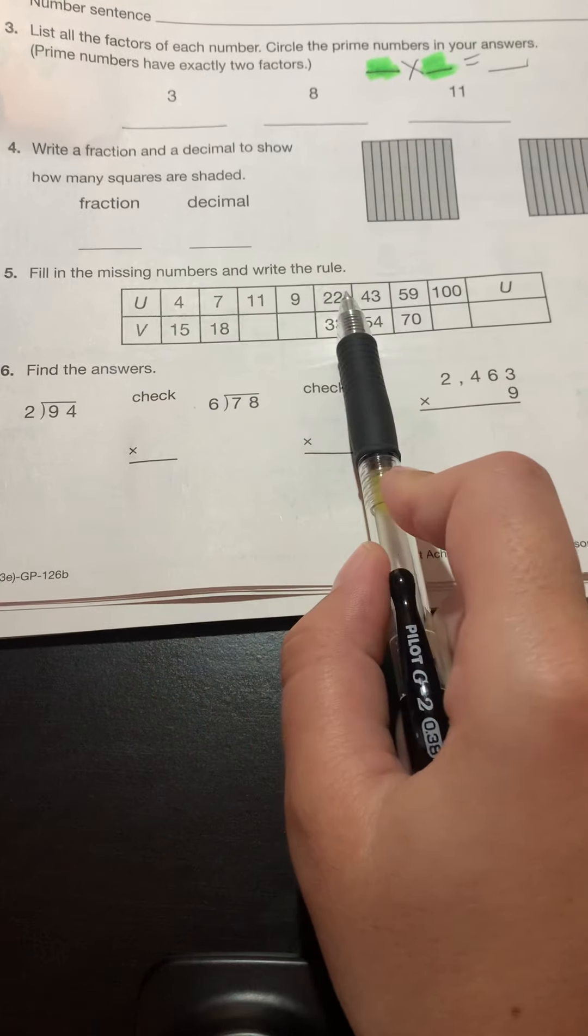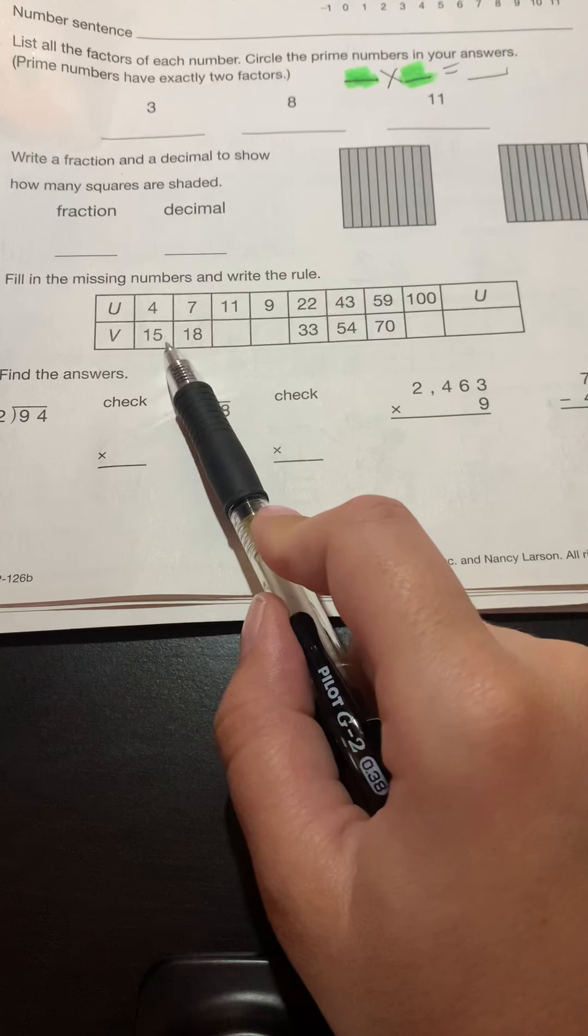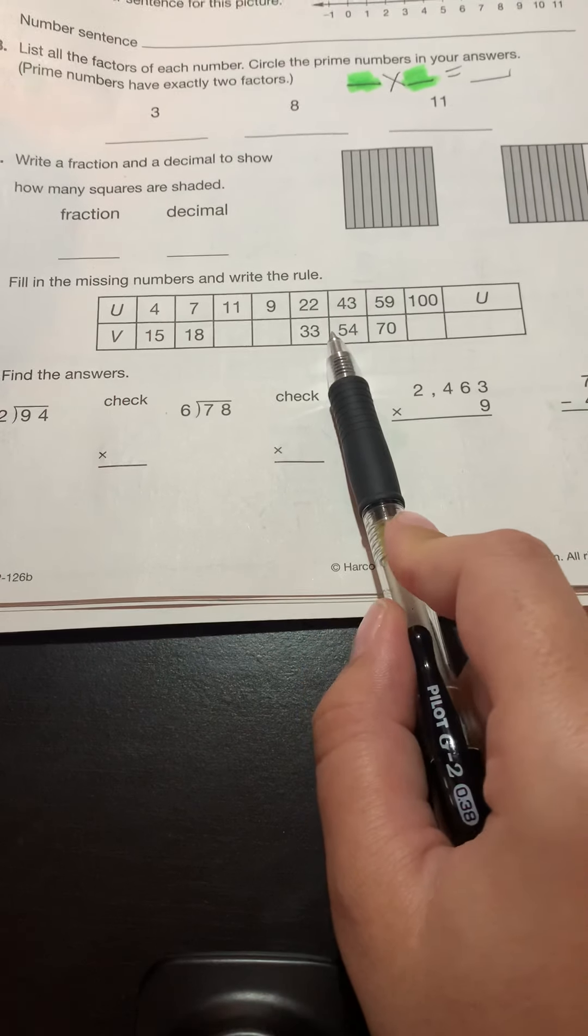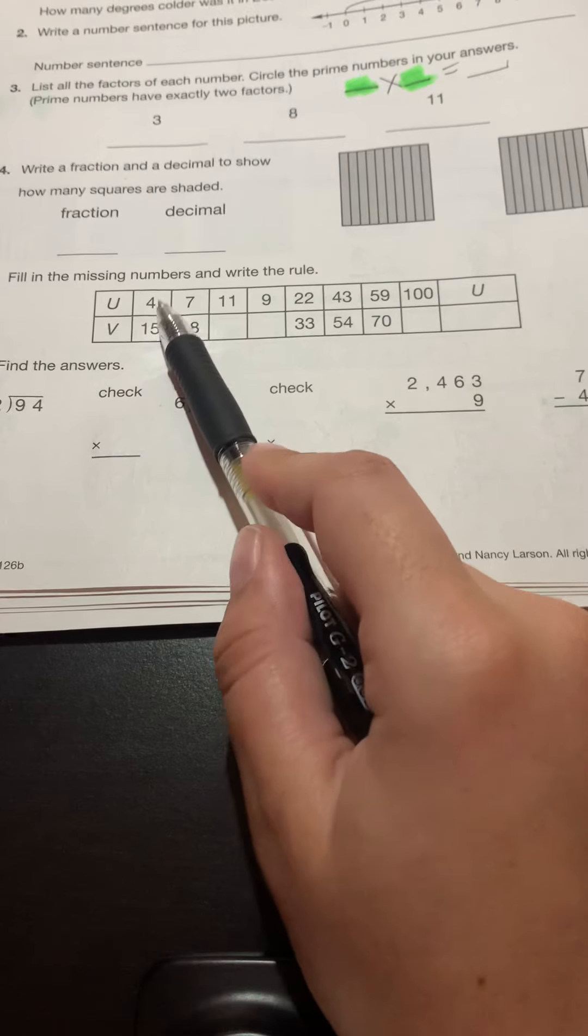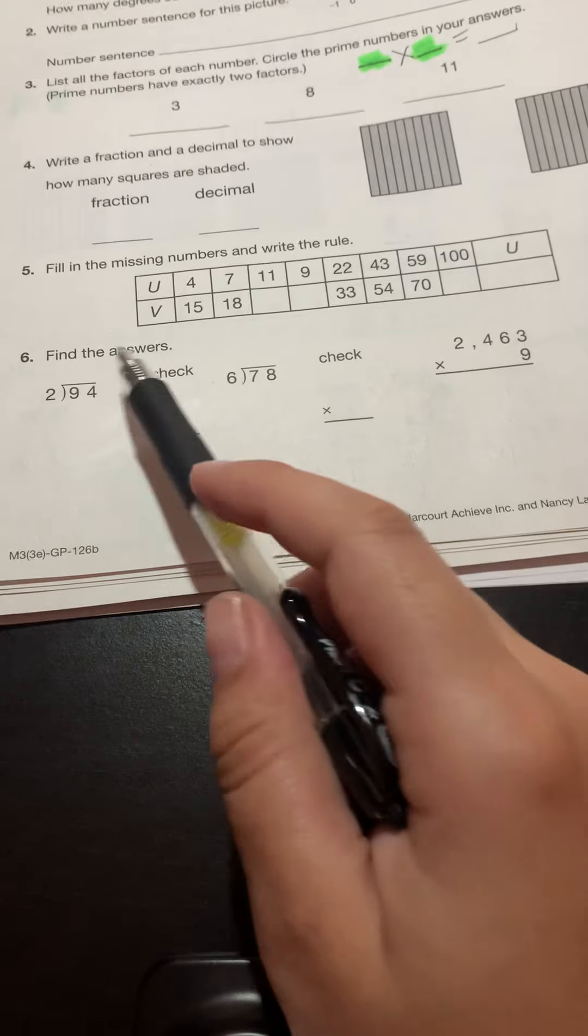Number five, fill in the missing numbers and write the rule. The rule goes here. Take a look. How did I get from 4 to 15? How did I get from 7 to 18? How did I get from 22 to 33? If the numbers are going from small to bigger, what operation might that be?